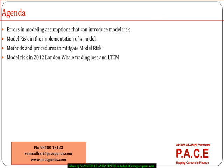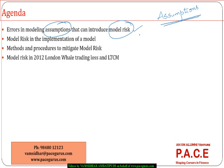One major source is the modeling assumptions. As part of our model building process, the assumptions that we have taken — problems with those assumptions could induce a model risk, meaning the firm loses because of using a wrong model. That is what comes under model risk.